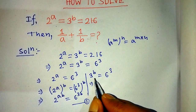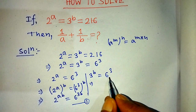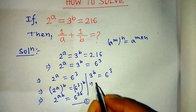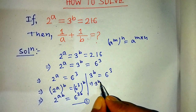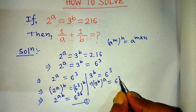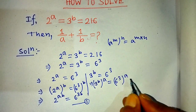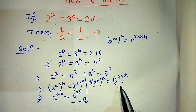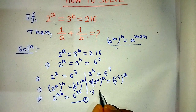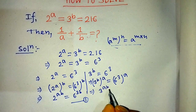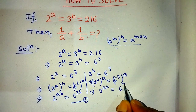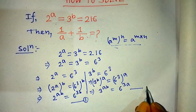In the second equation, 3 to the power B is equal to 6 to the power 3. We take power A on both sides: 3 to the power B, whole to the power A, is equal to 6 to the power 3, whole to the power A. Applying the same formula, we get 3 to the power AB is equal to 6 to the power 3A. This is equation number 2.